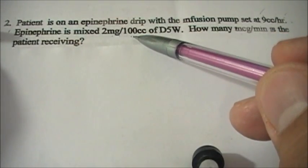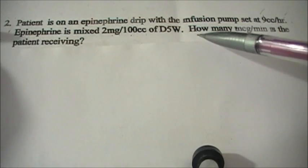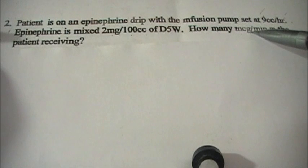is 2 milligrams per 100 cc or ml of D5 water. So the question is you have to look for mcg per minute here. So what you have to do first is write the doctor's order. What is the doctor's order here?